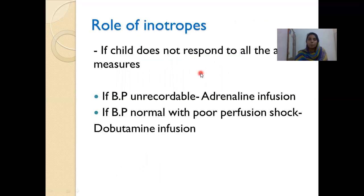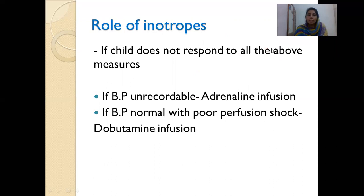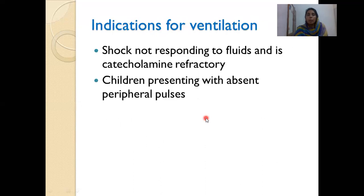Regarding inotropes: if the child does not respond to all the above measures, consider inotropes — adrenaline if BP is unrecordable, dobutamine where BP is normal with poor perfusion. Indications for ventilation: shock not responding to fluids and catecholamine-refractory; also consider ventilation in children with absent peripheral pulse as they tend to develop coagulopathy faster and may have pulmonary hemorrhage earlier.